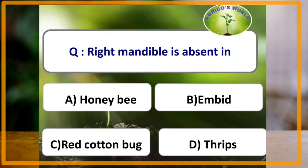Right mandible is absent in which of the following? The answer is thrips. Thrips have asymmetrical mouthparts due to the absence of the right mandible.